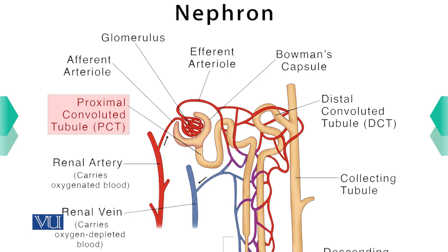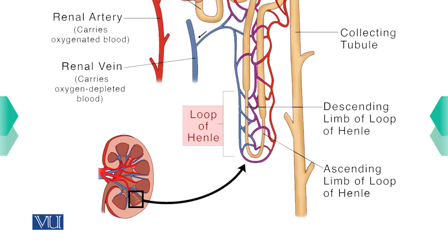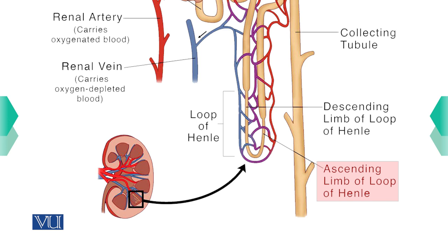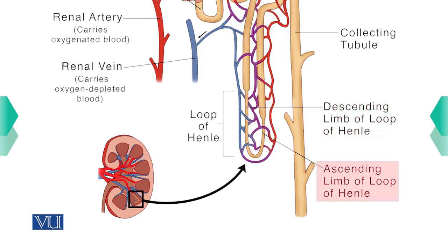The Bowman's capsule leads to the proximal tubules, where some material is absorbed back into the blood. The proximal convoluted tubules lead to a U-shaped structure called the loop of Henle, which we mentioned is not well developed in lizards. The loop of Henle has two parts: the descending loop of Henle going downward, and the ascending loop of Henle going upward.